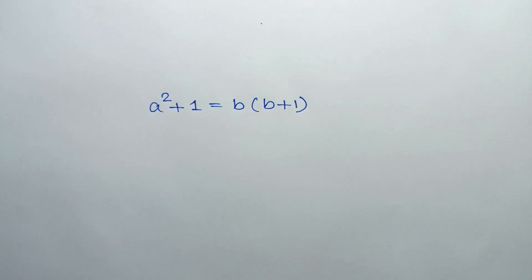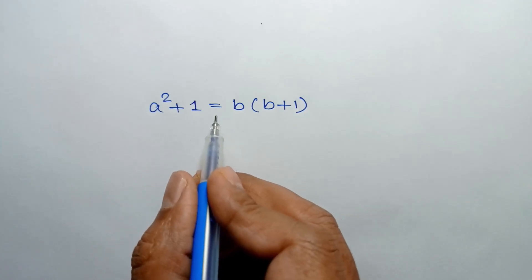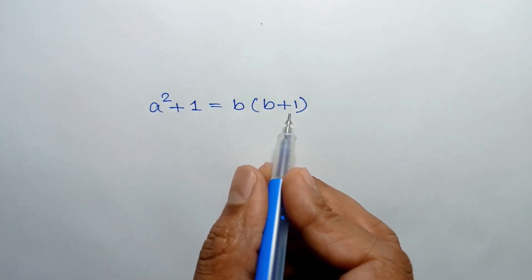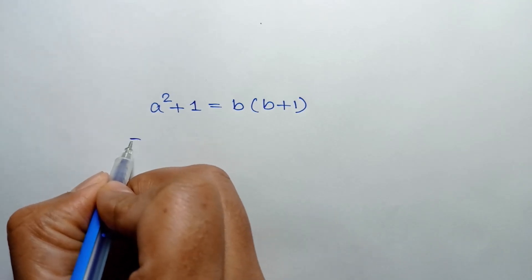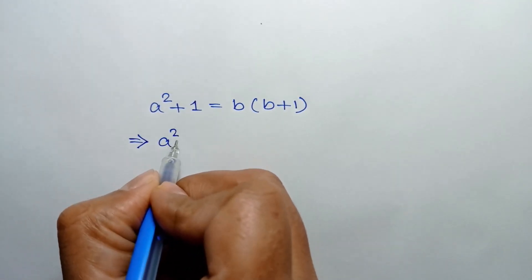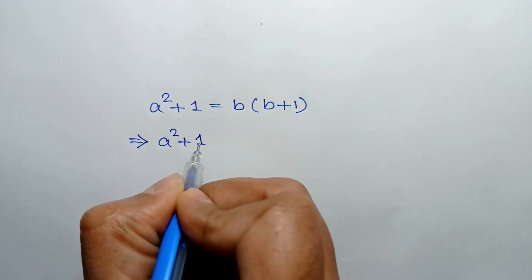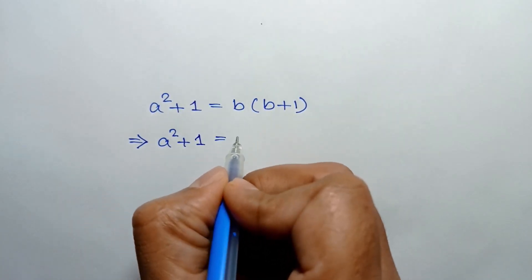Hi everyone. In this video I am going to show how to find the integer solution of a² + 1 = b(b+1). Expanding the right side, we can write b times b is b², plus b times 1 is b.